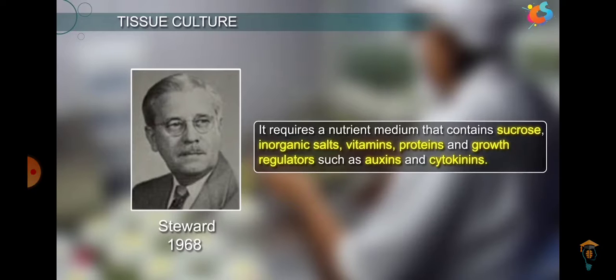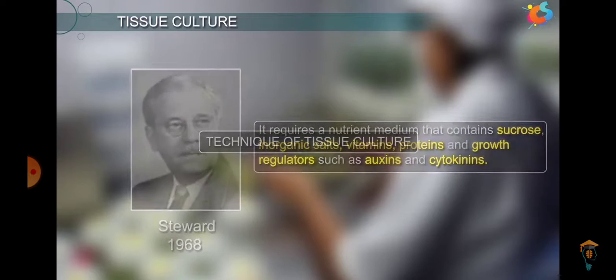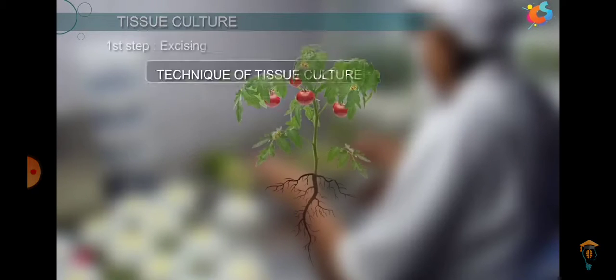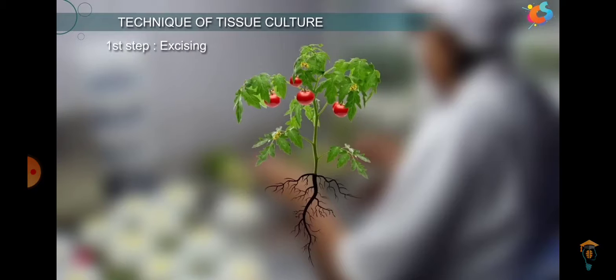When the requisite nutrient medium — which contains sucrose, salts, vitamins, proteins, and growth hormones like auxins and cytokinins — is given to the explant, that is the meristematic part, it can give rise to a whole new plant.